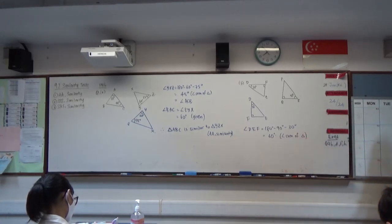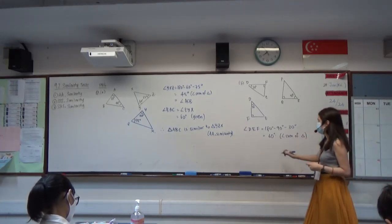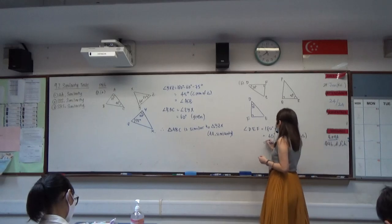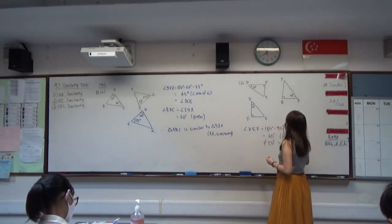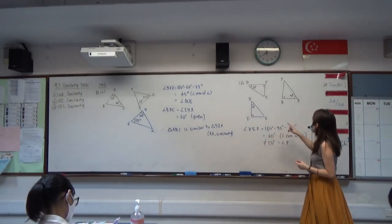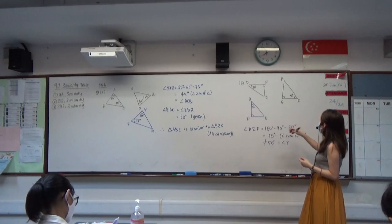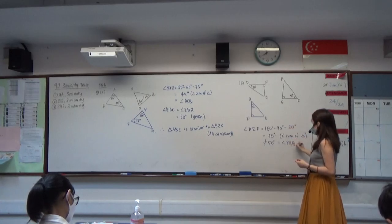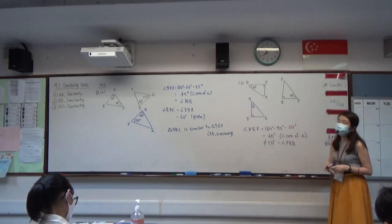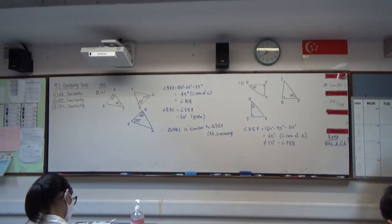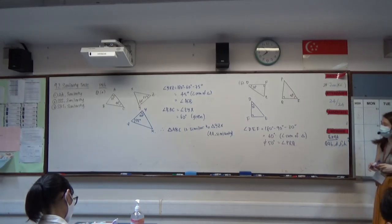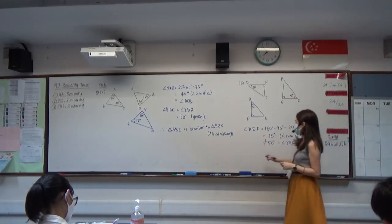Because it is 60 degrees and not 50 degrees, it will fail the AA similarity test. Therefore, it is not similar — the two triangles are not similar.